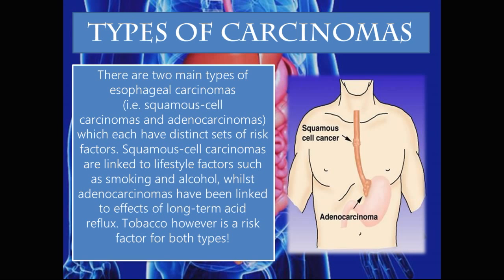There are two main types of esophageal carcinomas: squamous cell carcinomas and adenocarcinomas, each with distinct sets of risk factors. Squamous cell carcinomas are linked to lifestyle factors such as smoking and alcohol, whilst adenocarcinomas have been linked to the effects of long-term acid reflux. Tobacco, however, is a risk factor for both types.